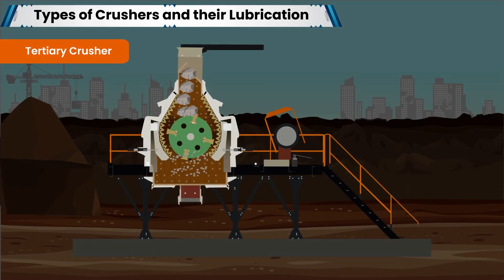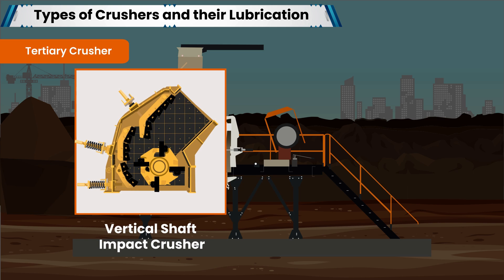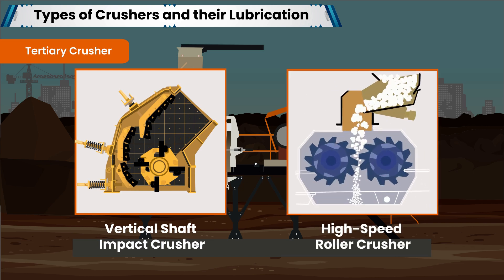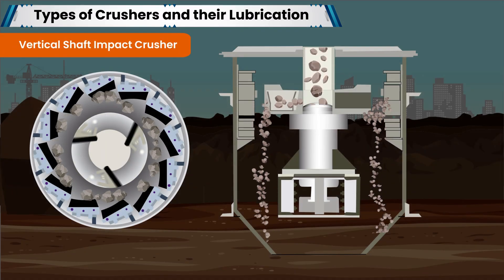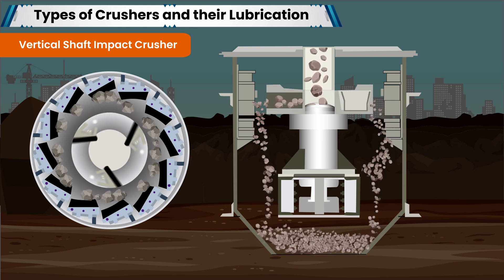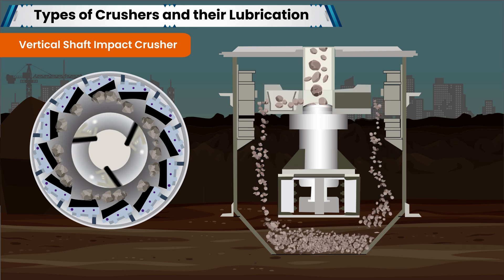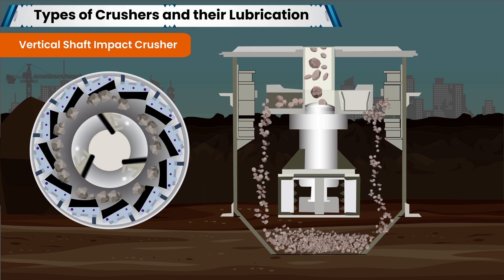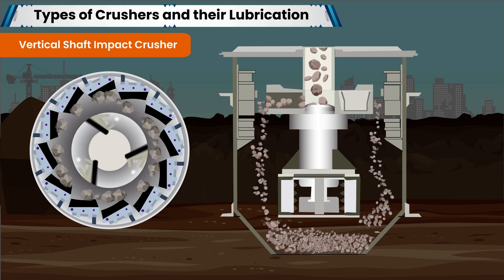Tertiary crushers employ a combination of impact, attrition, and shear working principle to crush medium to small size ore particles. These include vertical shaft impact crushers and high-speed roller crushers. The vertical shaft impact crusher uses the rock-on-rock crushing process. The material is fed through the hopper at the center of the rotor, then accelerated to high speed before being discharged through openings in the rotor periphery. The material particles are crushed as they hit the breaker plates in the main crushing chamber at high speed and collide against each other.